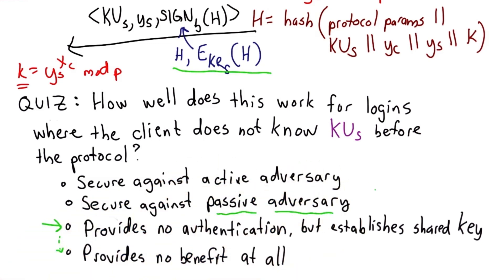If there's an active adversary, this definitely provides no benefit because the active adversary can do the attack in the middle, impersonate the server, establish the key, and that's the one who has the shared key instead of the server that you intend to talk to.